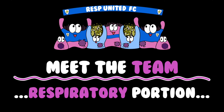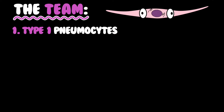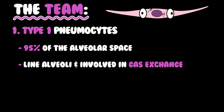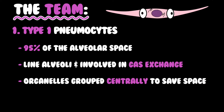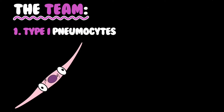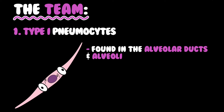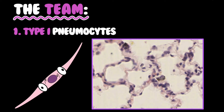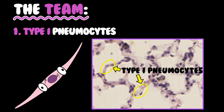Now meet the team — the respiratory portion. First, type 1 pneumocytes. These constitute 95% of the alveolar surface. They line the alveoli and are involved in gas exchange. Their organelles group centrally to save space. Type 1 pneumocytes are found in the alveolar ducts and alveoli and are extremely thin and slender in morphology. Here you can see multiple alveoli and our type 1 pneumocytes.